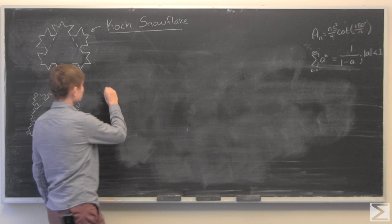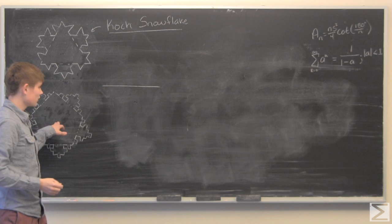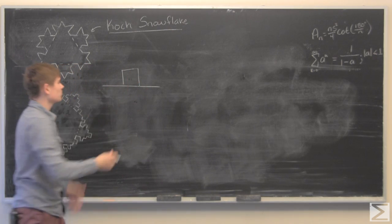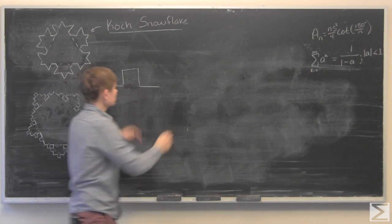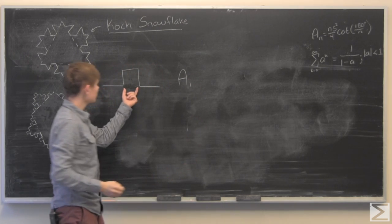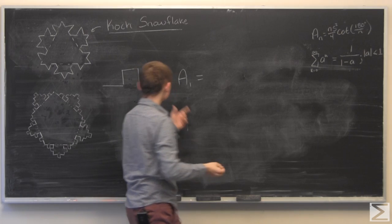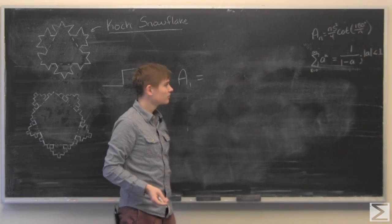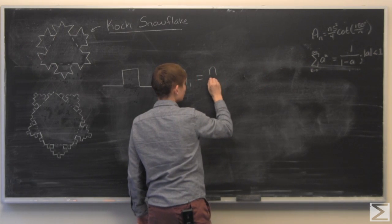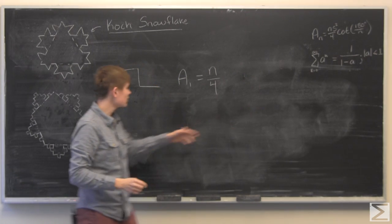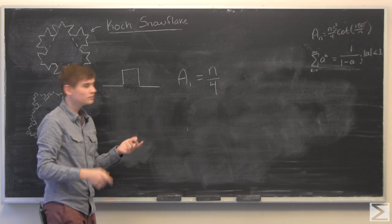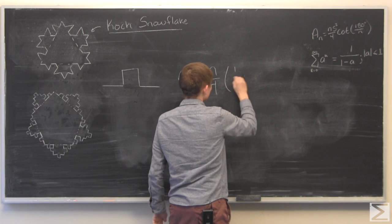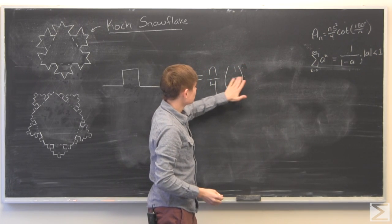To start this problem we're going to look at just one side of the generalized Koch snowflake. Since we used squares here we're just going to use squares, even though they're just placeholders for any n-sided regular polygon. The first iteration — we'll call the area A1 — is just equal to the area of this regular n-sided polygon. Using the formula derived earlier, we have n over 4, and with the original side length set to 1, the side here is one-third, so we have 1 over 9 times the cotangent of 180 degrees over n.